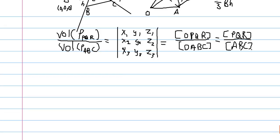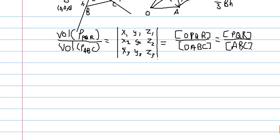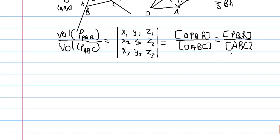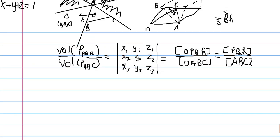And this is the area formula. This is actually how we get the equation of a line that we learned about in an earlier episode — it's a corollary of the area formula.